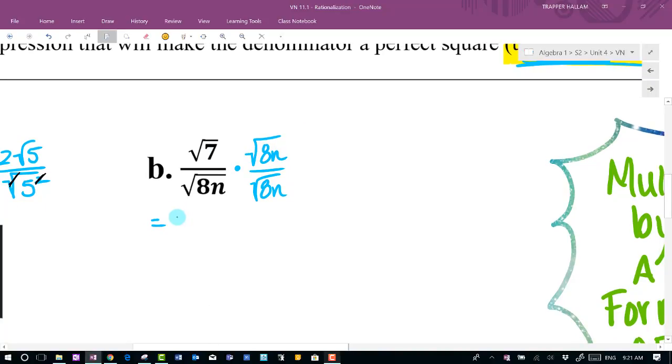So if I multiply the two numerators, I'm going to get under one radical. Again, showing my steps here, I'm going to take eight times seven times n. That's essentially what I'm going to get, right, when I multiply that portion. In the denominator, I'm going to get the exact terms that I'm looking for, eight squared times n squared, exactly what I wanted.